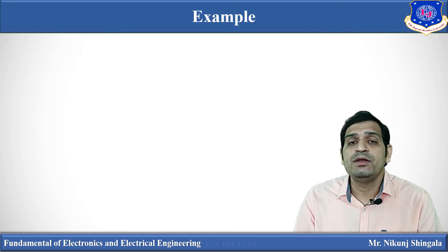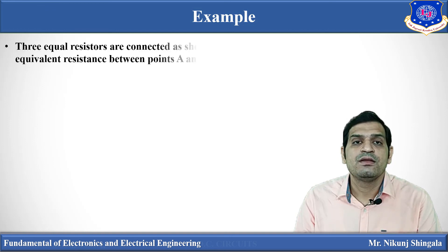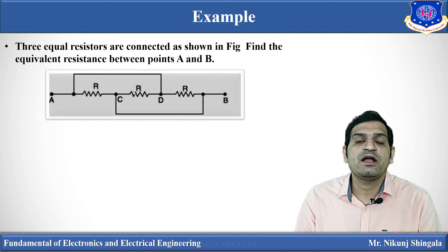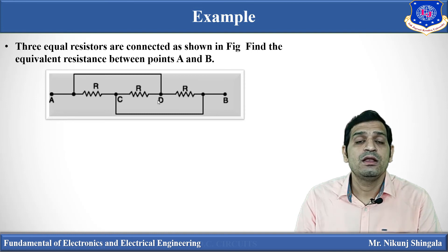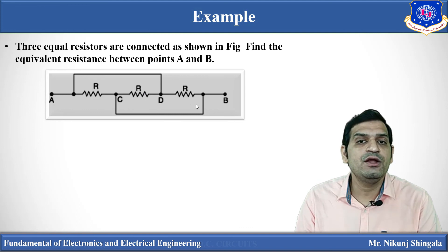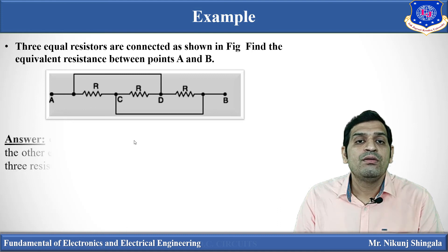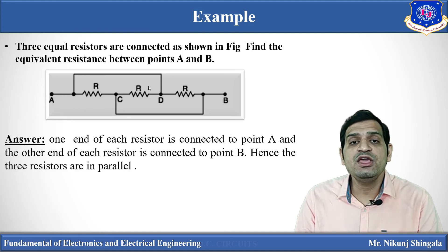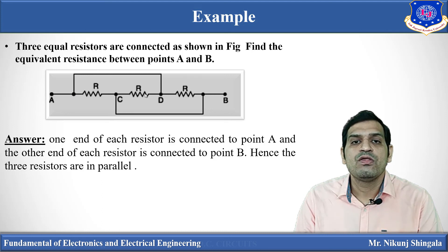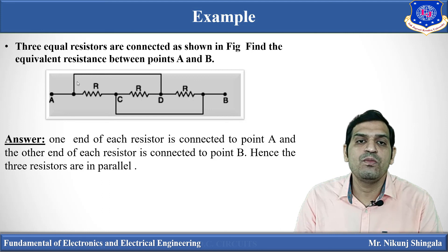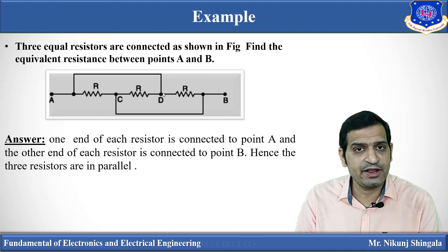Now, one example based on series and parallel connection of resistors. Three resistors are connected as shown in the figure; find the resistance between points A and B. This circuit looks complex, but if we draw the equivalent circuit it becomes easy. One end of each resistor is connected to common point A — point D is also connected to A — and the other ends are connected to point B.